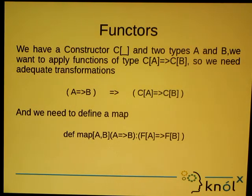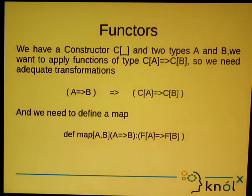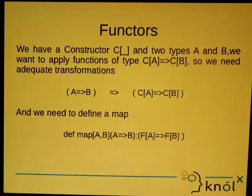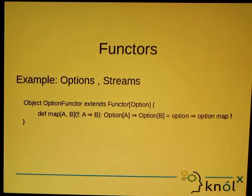Suppose we have a constructor C in Scala and we have two types A and B and we want to apply functions of that type. So we need to have some transformations — a transformation of a function from one type to a function of another type. So we need to define a map which gives us this transformation. Examples of functors in Scala are Options, Streams, Futures, Lists and many more.